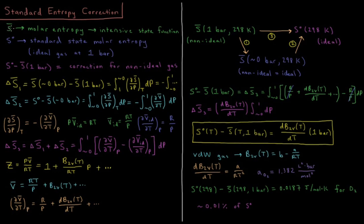We're going to start off by defining some terms. We have S-bar, which is the molar entropy, an intensive state function — that's the entropy of our system divided by the number of moles. We also have S with the circle superscript, the standard state molar entropy, where the standard state for gases is a hypothetical ideal gas at one bar of pressure.